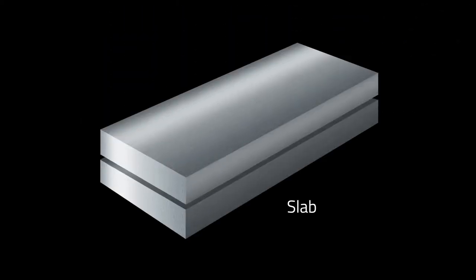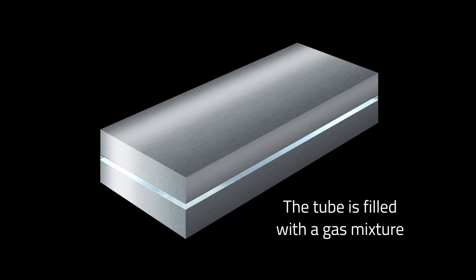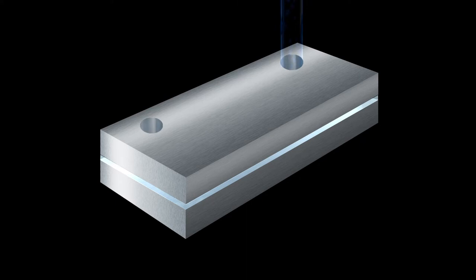A sealed CO2 laser consists of two slab electrodes inside a sealed tube. The tube is filled with a gas mixture including carbon dioxide, nitrogen, and helium. The electrodes are water cooled.